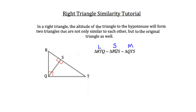On the large triangle, we begin at the vertex at the top of the shortest side — the shortest side being QR. We travel along the hypotenuse to vertex T, then along the second longest side to Q. For triangle RQS, we start at R again, travel along the hypotenuse to Q, then along the second longest side to vertex S. For the medium triangle, we start at Q, travel along the hypotenuse to T, then down the second longest side to S. This way we've labeled all three triangles in the same order, confirming the similarity.